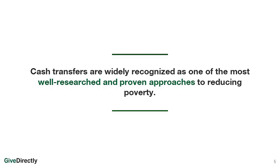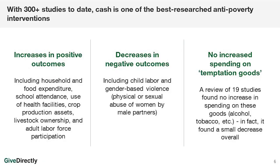Why cash transfers? Cash transfers are probably the most widely studied and researched poverty alleviation approach. There are over 300 studies done about cash transfers in a number of countries, contexts, and populations. Basically, what the research shows are three things: cash transfers significantly improve positive outcomes, they decrease negative outcomes, and people don't just drink the money. The money is not spent on booze, alcohol, cigarettes, or other so-called temptation goods.